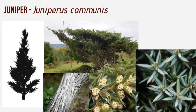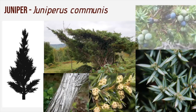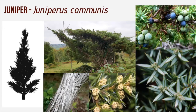Juniper is also dioecious, meaning it has male and female structures on separate trees. The male structures are small yellow forms that grow at the axil of the leaf near the tips of the twigs. Once pollinated by wind, the green female structures develop into fleshy, purple, aromatic berry-like cones. When young, the berries are green, but over 18 months or so they mature to a dark purple-black colour. They're eaten and distributed by birds, but they also provide the essential flavouring of one of the world's most favourite spirits — gin.